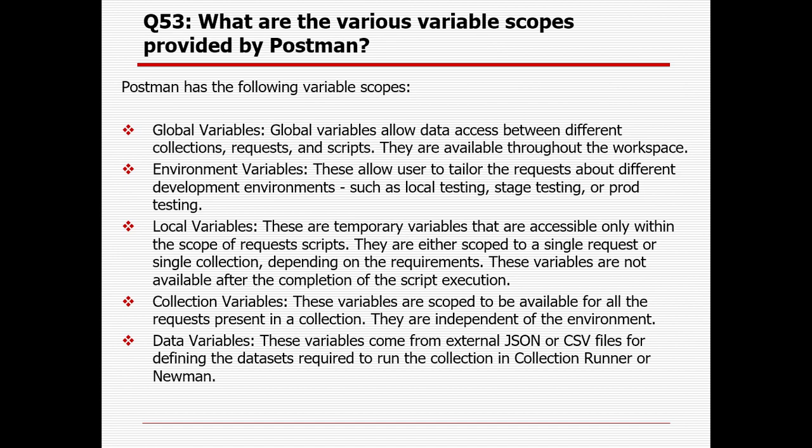What are the various variable scopes provided by Postman? Postman has the following variable scopes: global variable, environment variable, local variable, collection variable, and data variable. Global variables allow data access between different collections, requests, and scripts — they are available throughout the workspace. Environment variables allow users to tailor requests across different development environments such as local, testing, or production.